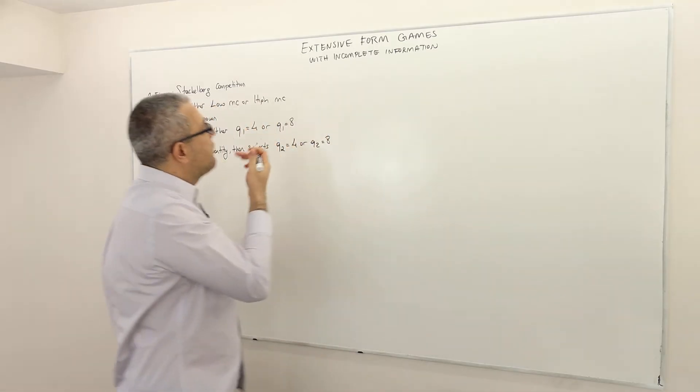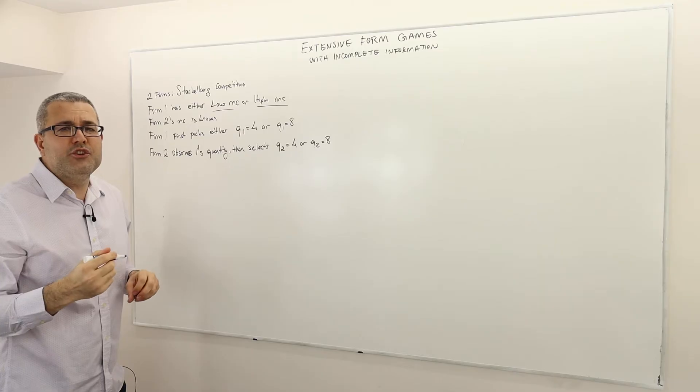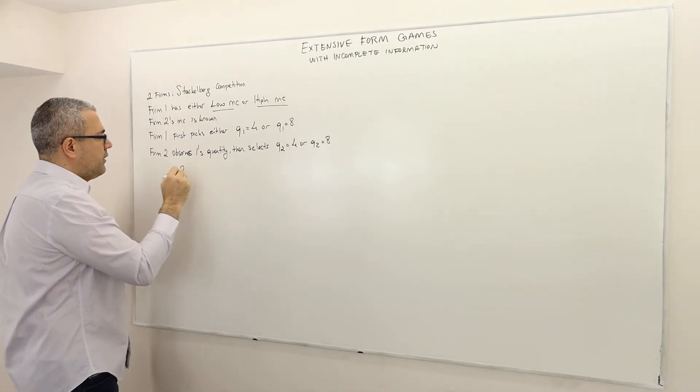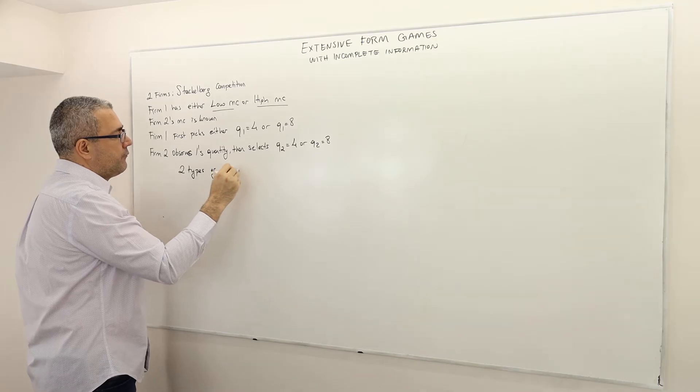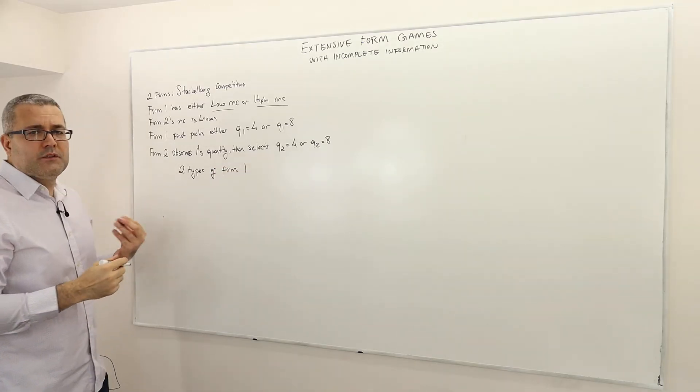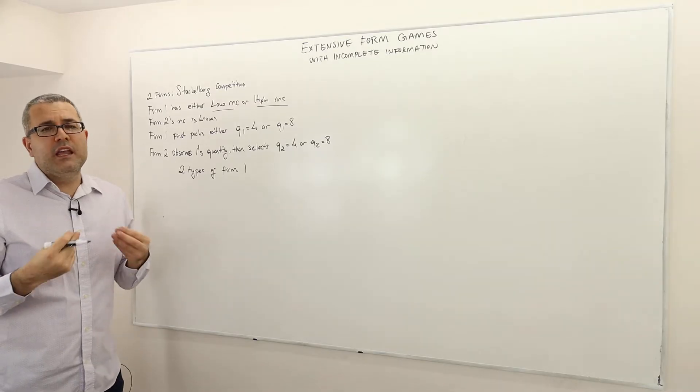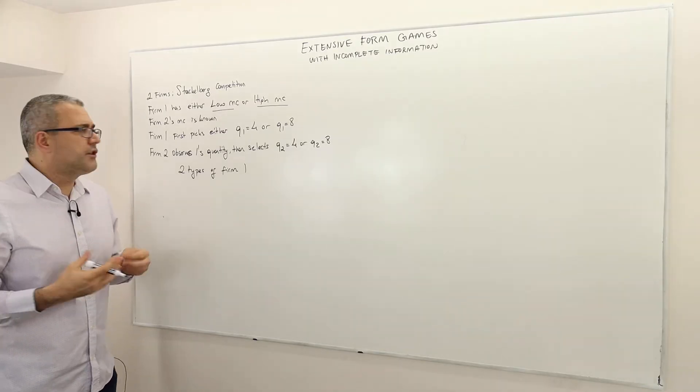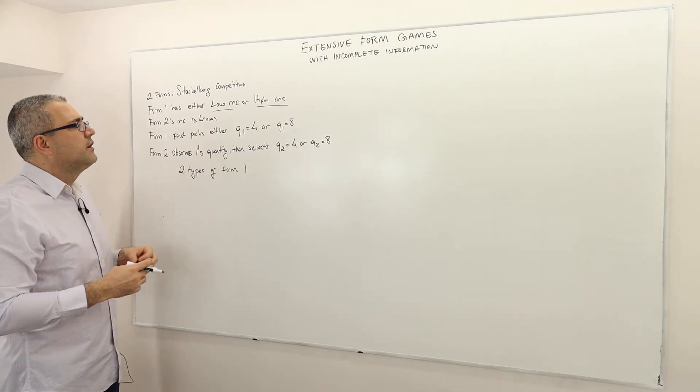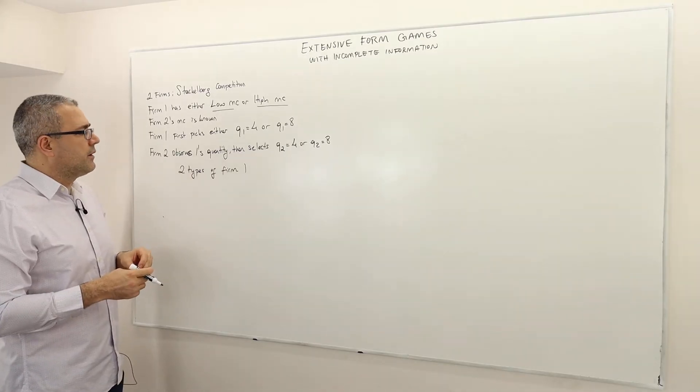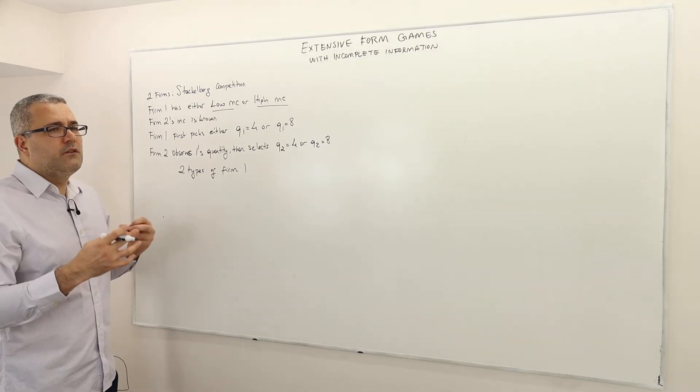So first off, remember we have two potential types for firm 1. It's either low cost firm 1 or high cost firm 1. You can name the types as you wish but low cost, high cost is standard given the story of the question. So how am I going to incorporate all this into my game tree?